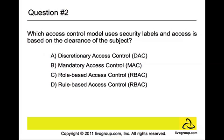Question number two. Which access control model uses security labels and accesses based on the clearance of the subject? The answer is B, mandatory access control. In a mandatory access control, it's an access policy determined by the system and not the owner. This type of access control processes highly sensitive data such as classified government and military information. In a MAC-based system, all subjects and objects must have labels assigned to them, and a subject's sensitivity label specifies its level of trust.